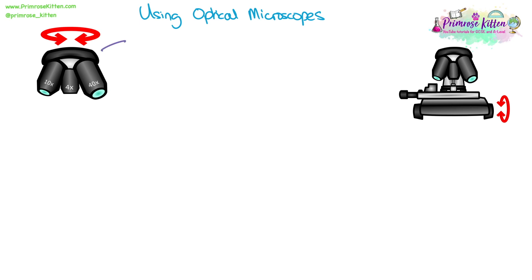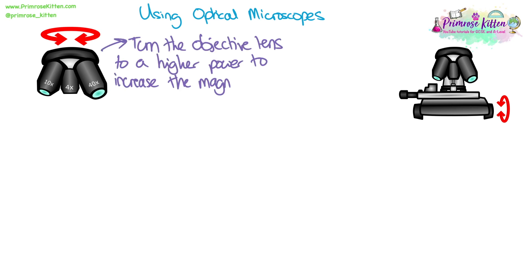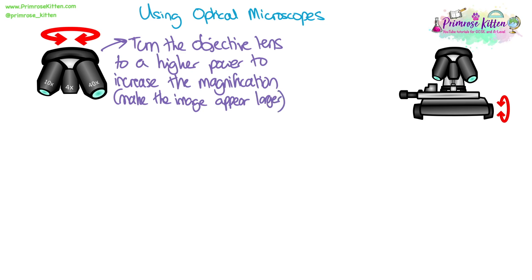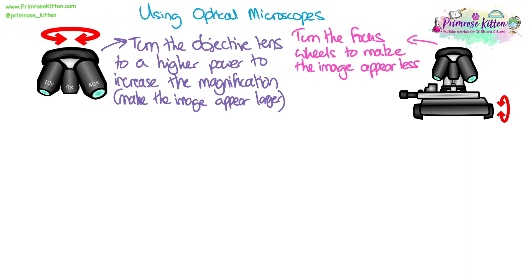When using optical microscopes, we need to make sure we're using the correct language and that we can explain how to use a microscope to observe objects. The way we increase the magnification is to turn the objective lens to a higher power, which makes the image appear larger. The focus wheels are used to make the image appear less blurry — to bring it into focus.